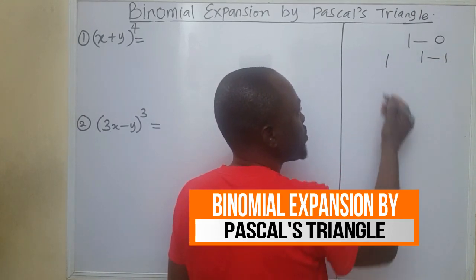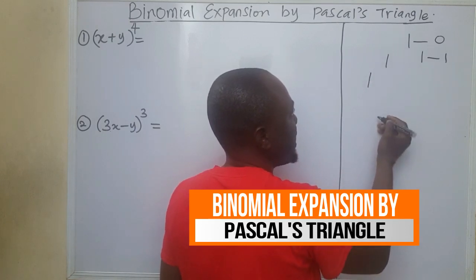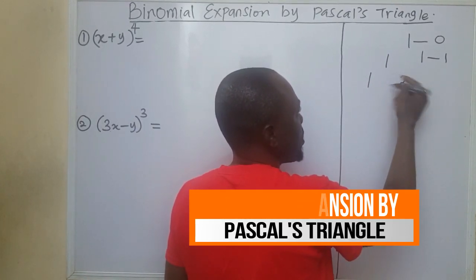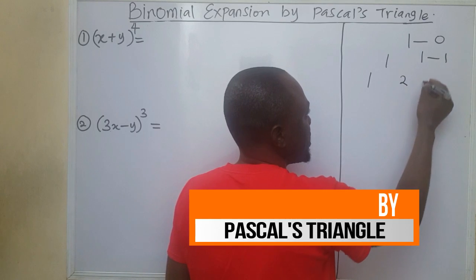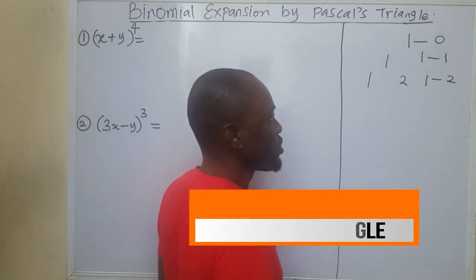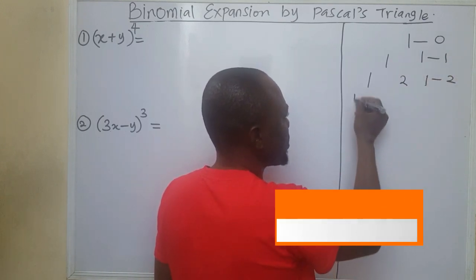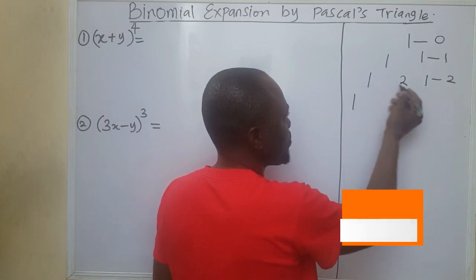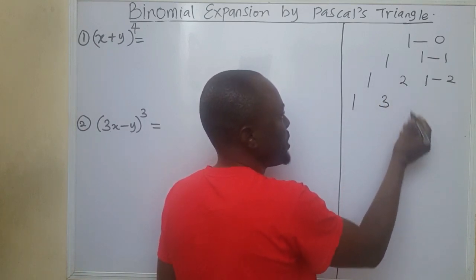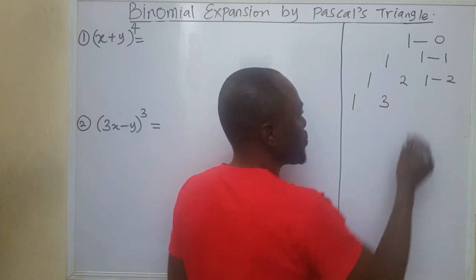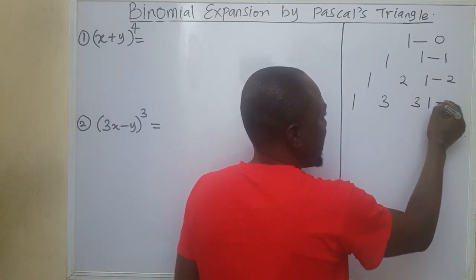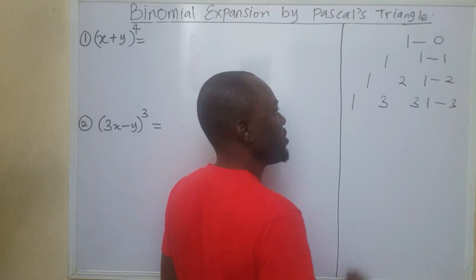For power of 2, I will do the same thing. I will bring 1 at the end. 1 plus 1 is 2, I will put 2 in between and I will bring 1 here. This is for power of 2. For power of 3, I will bring 1. 1 plus 2 is 3, I will put 3 in between. 2 plus 1 is 3, I will place 3 in between and then I will bring 1 at the end. This is the power of 3.